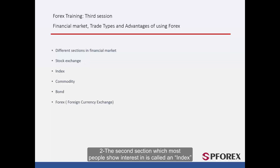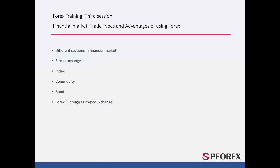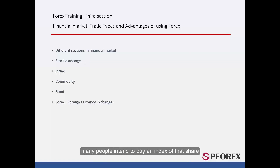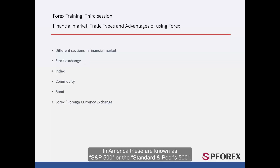The second section, which most people show interest in, is called an index. This is where, instead of buying a single share of a company, many people intend to buy an index of that share. These can be traded internationally. In America, these are known as S&P 500, or the Standard & Poor's 500, and in Germany they are known as DAX.